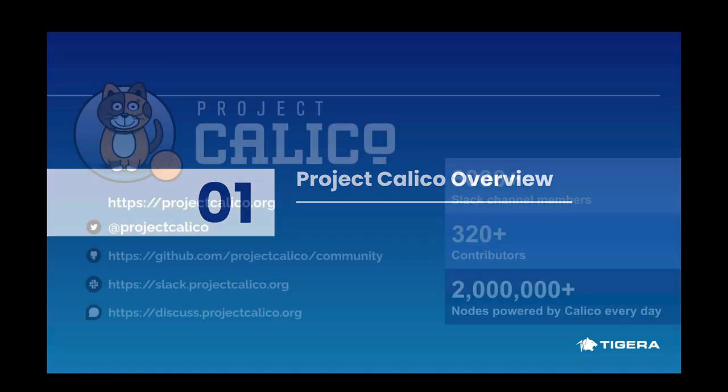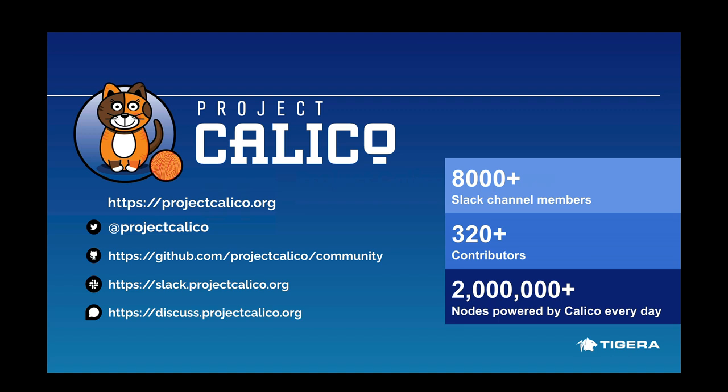Project Calico is an active community about cloud networking and security. We have a thriving community with more than 300 contributors and 8,000 Slack channel members. Feel free to join our community using these social networking handles and drive the conversation where you feel a need for a change, or seek help for your Calico adventure from developers who are actively working on the project. Our Slack channel, slack.projectcalico.org, is an inclusive environment dedicated to Calico and support for our open source community members.